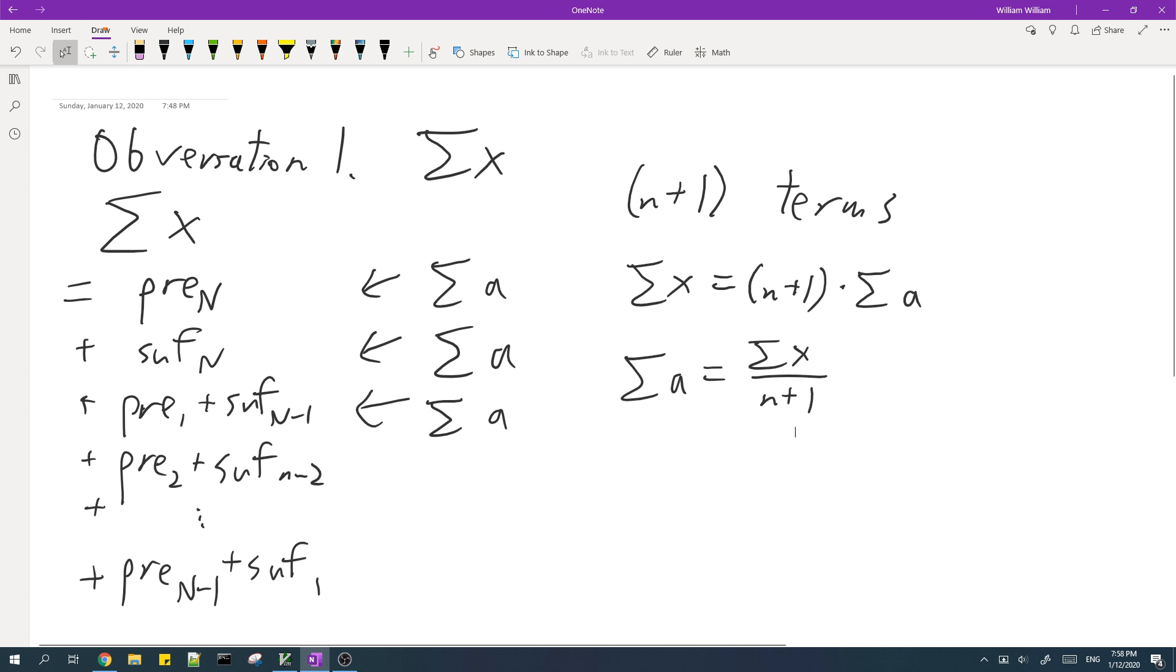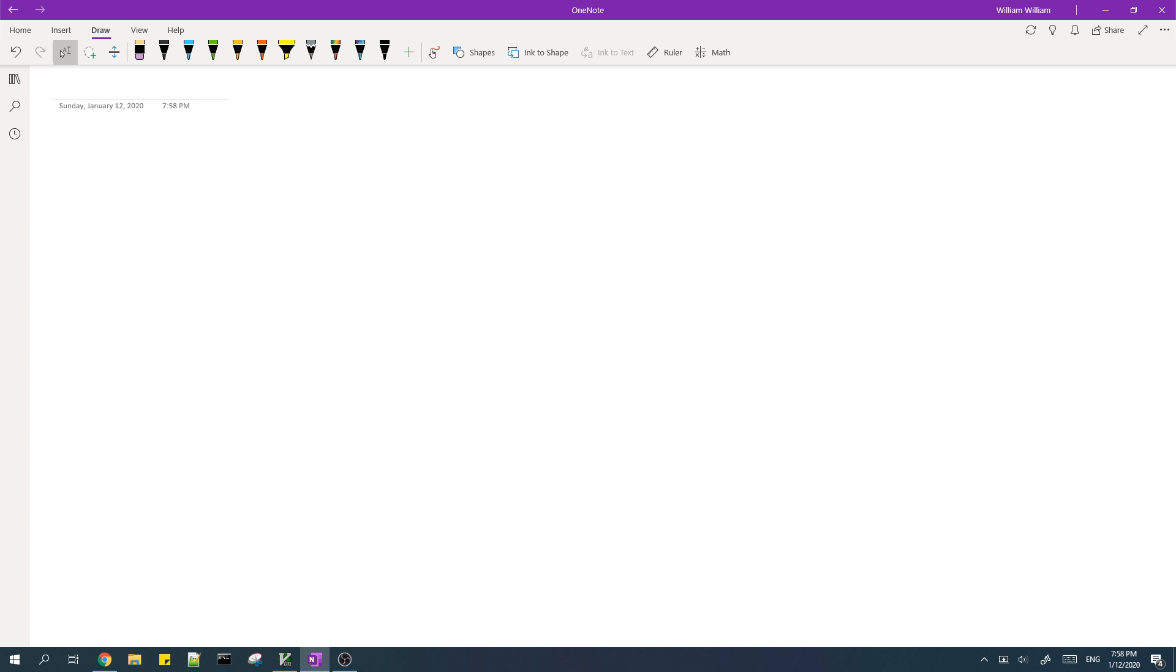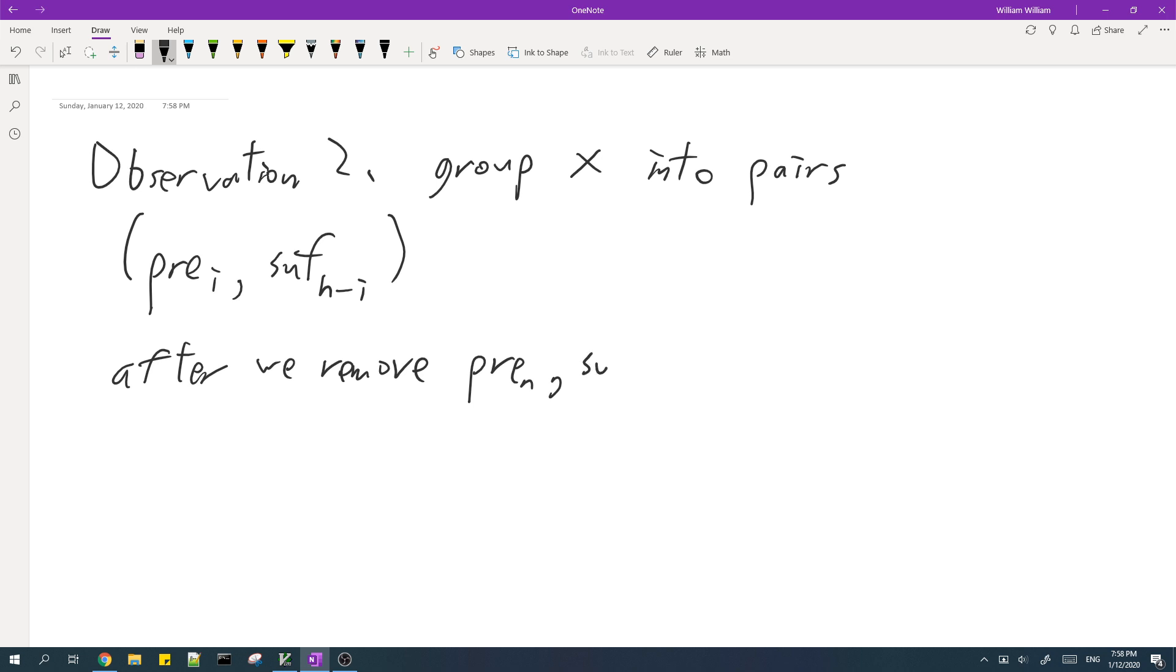Okay. Now, the second observation is that we can group x into pairs such that each pair consists of a prefix of length i and a suffix of length n minus i. And this is after we remove a prefix of n and suffix of n from x.